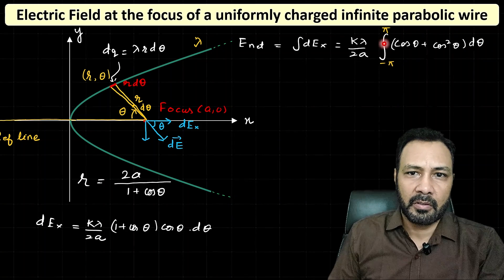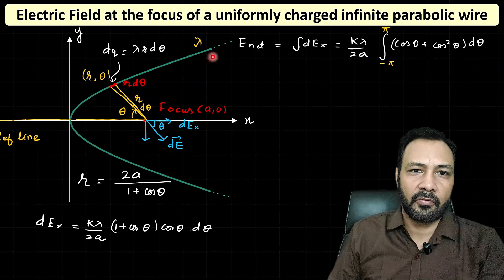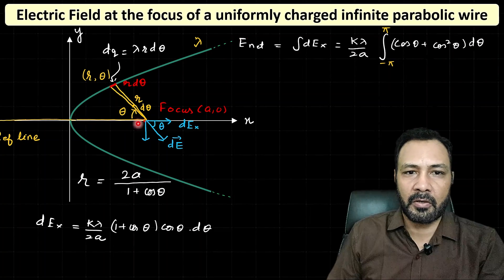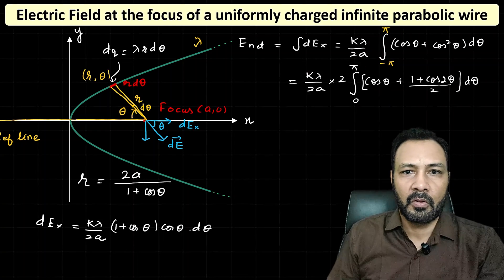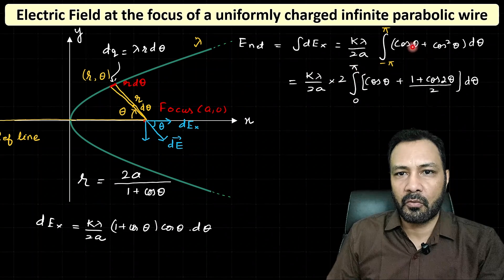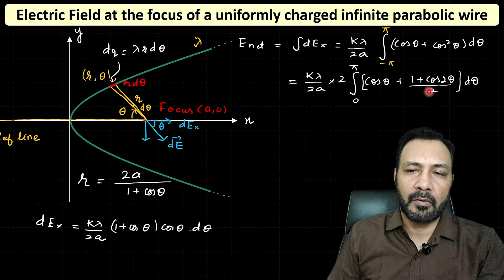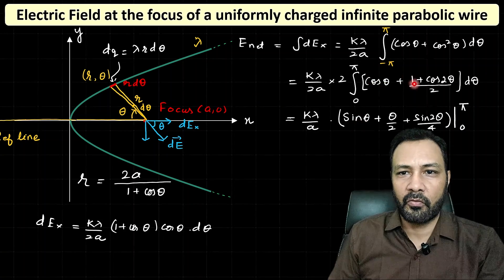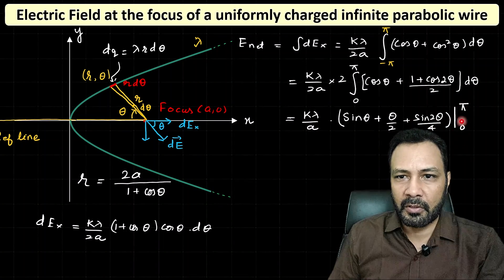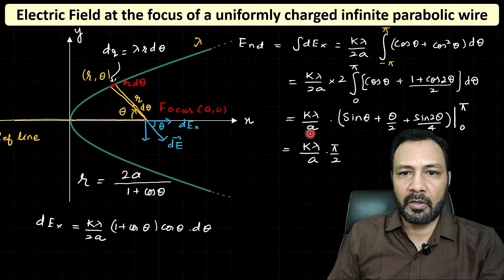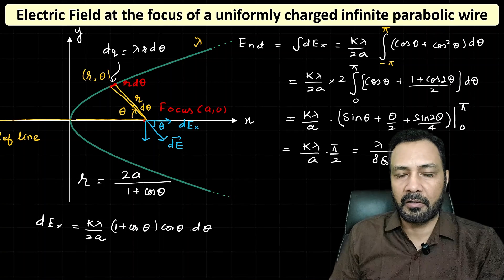Replacing cos²θ with (1 + cos2θ)/2 and integrating: ∫₀^π cosθ dθ = [sinθ]₀^π = 0; ∫₀^π (1/2) dθ = π/2; ∫₀^π cos2θ/2 dθ = [sin2θ/4]₀^π = 0. So the integral equals π/2, giving E_net = [kλ/(2a)]·2·(π/2) = kλπ/(2a).